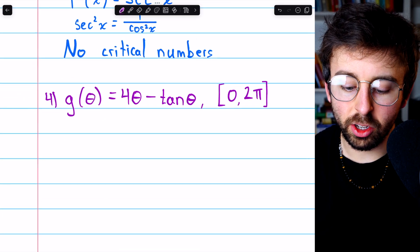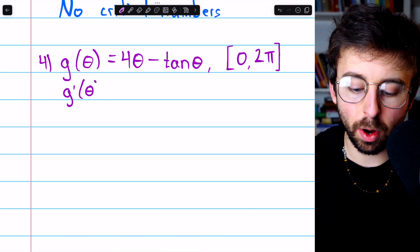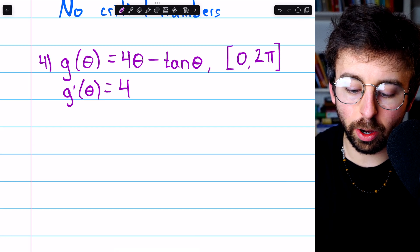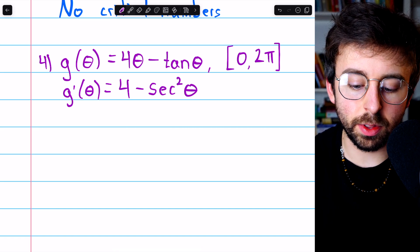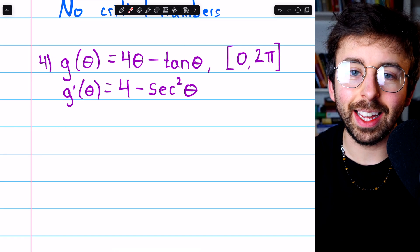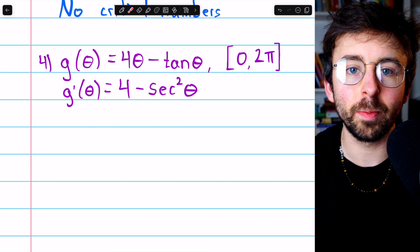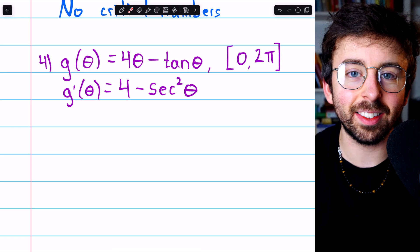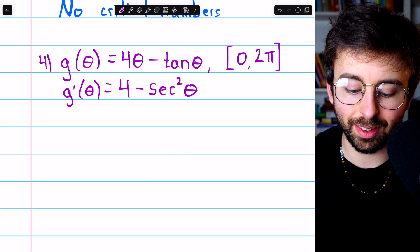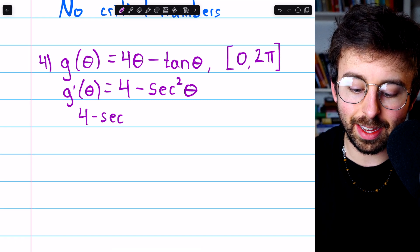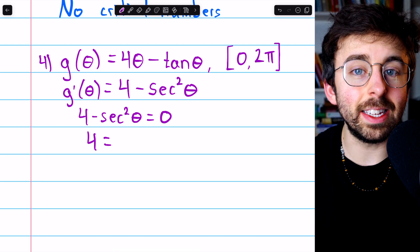Moving on to problem 4, g of theta equals 4 theta minus tan theta. Let's start with the derivative, g prime. The derivative of 4 theta is 4, and the derivative of tan theta is secant squared theta. Again, the places where the derivative doesn't exist come from cosine in the denominator, and the original function also has cosine in its denominator, so no such places are in the domain. We can just move on to setting the derivative equal to zero: 4 minus secant squared theta equals zero, so 4 equals secant squared theta.